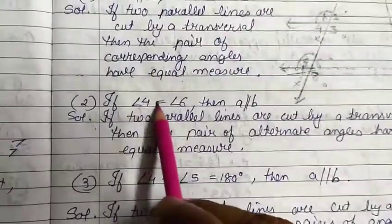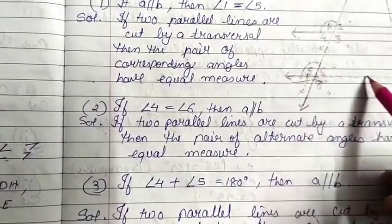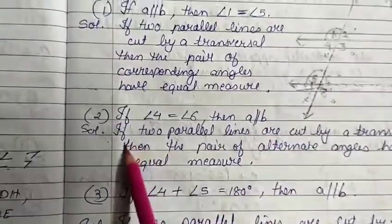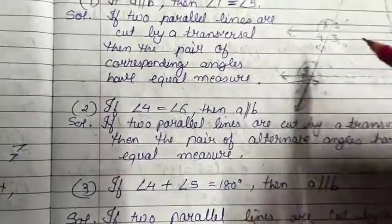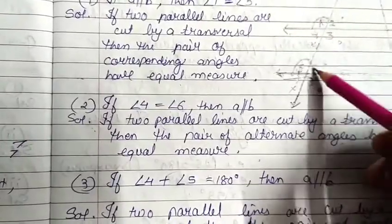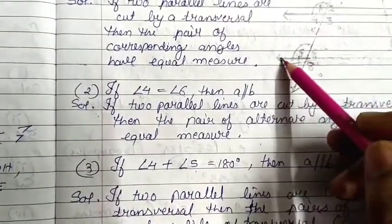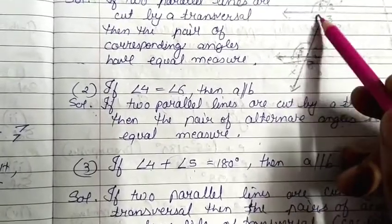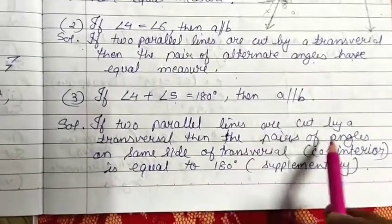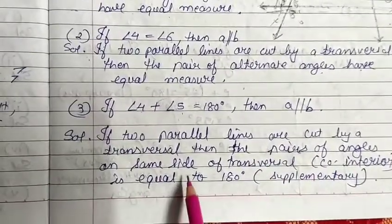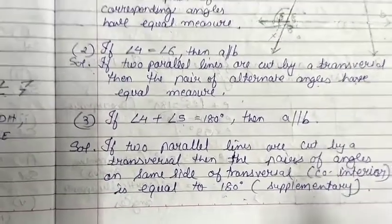Next, angle 4 equals angle 6 — these are a Z-like structure, so it is alternate angles. Write: if two parallel lines are cut by a transversal, then the pair of alternate angles have equal measure. Then, angle 4 plus angle 5 — this is a C-like structure, angles on the same side of the transversal, known as co-interior angles. Write: if two parallel lines are cut by a transversal, then the pair of angles on the same side of the transversal, i.e., co-interior angles, equals 180 degrees — that is, supplementary.